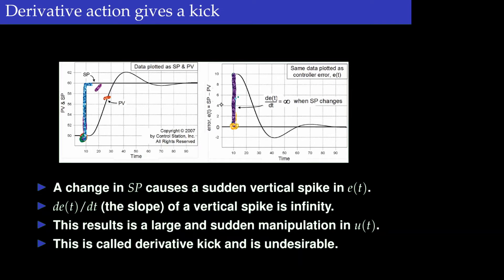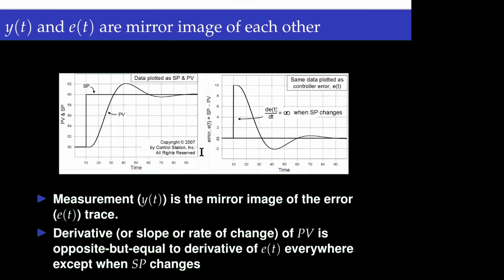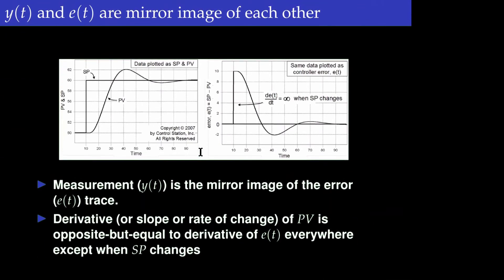From a physical perspective, due to this large derivative action the control valve will either completely open or completely close very fast, causing mechanical wear and tear in the control valve. This is the derivative kick. It occurs because when the set point changes, there is a very large change in the error, so the derivative of that large change gives a very large control action — which is undesirable.